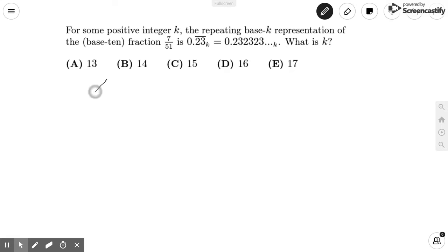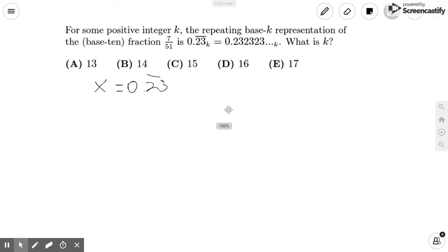So to start off, let us set some value x equal to 0.23 repeating. And we want to figure out x in terms of base 10, so we can set it equal to 7 over 51 in the end.